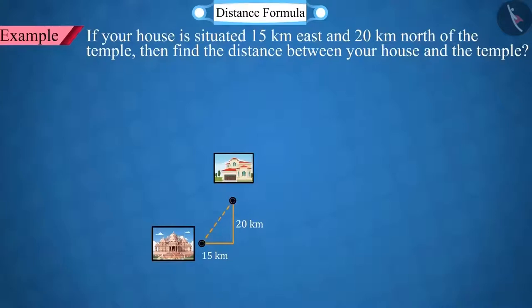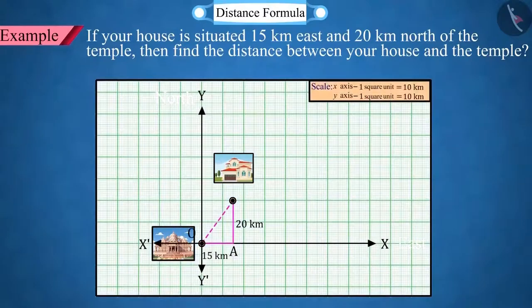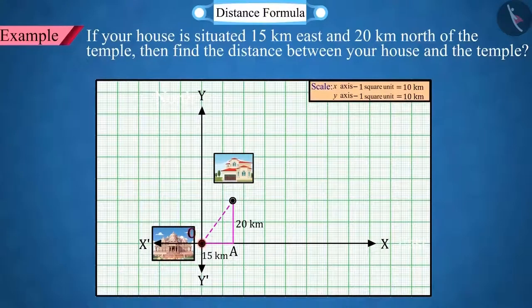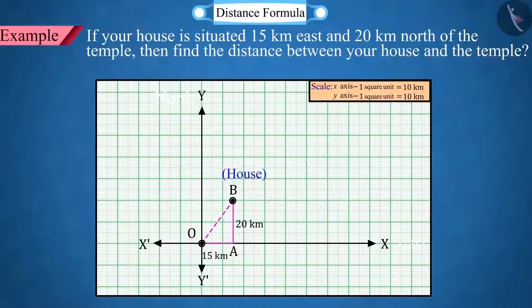First of all, we represent it graphically, which is what we see in this picture, where point O is represented as temple and point B as the house.